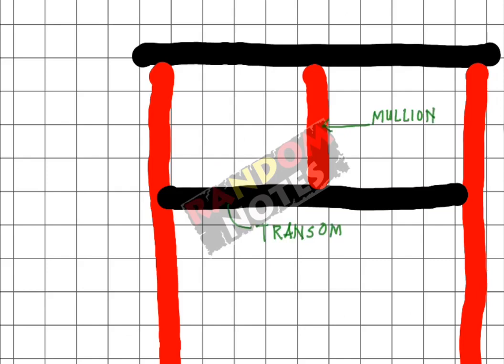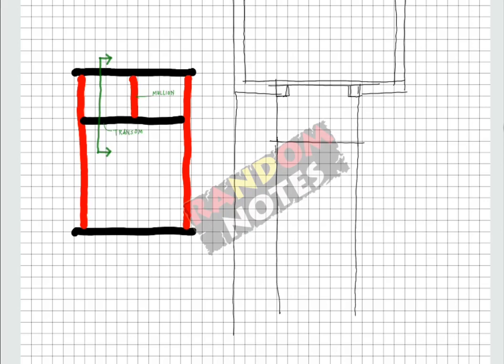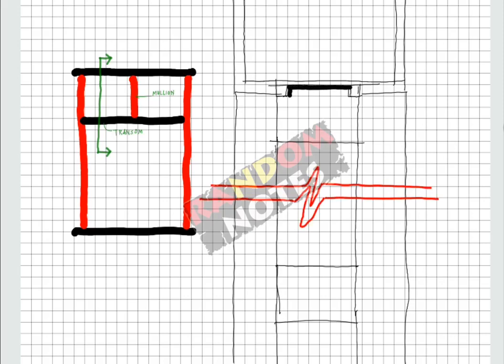Let us make this detailed section to understand the profile of the transom. This is the head on top which has lintel above it and a rebate on lower part to support a shutter. Below it is the transom which has rebate for shutter on both the sides since the shutter of the fanlight above and the window below both will come and rest here.